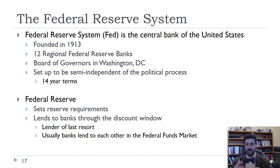Governors serve 14-year terms. The presidents of the regional banks are elected by their member banks. And there's a rotating membership in the Federal Open Market Committee, which is the committee that actually sets the policy rate, which we'll talk about in a minute.